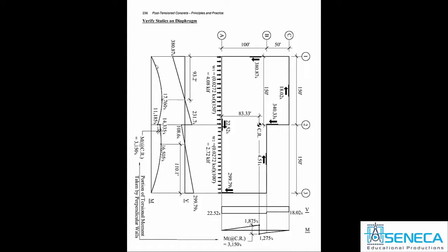There's going to be debate about whether you take this moment and equally transition it over the entire length of the diaphragm — that becomes the designer's choice. I think this is the conservative way to go because you get a peak maximum, so 14,335 foot-kips would be the one we use; any averaging would increase this number and decrease that number. We want to err on the side of conservatism, so this is the way we choose to present it.